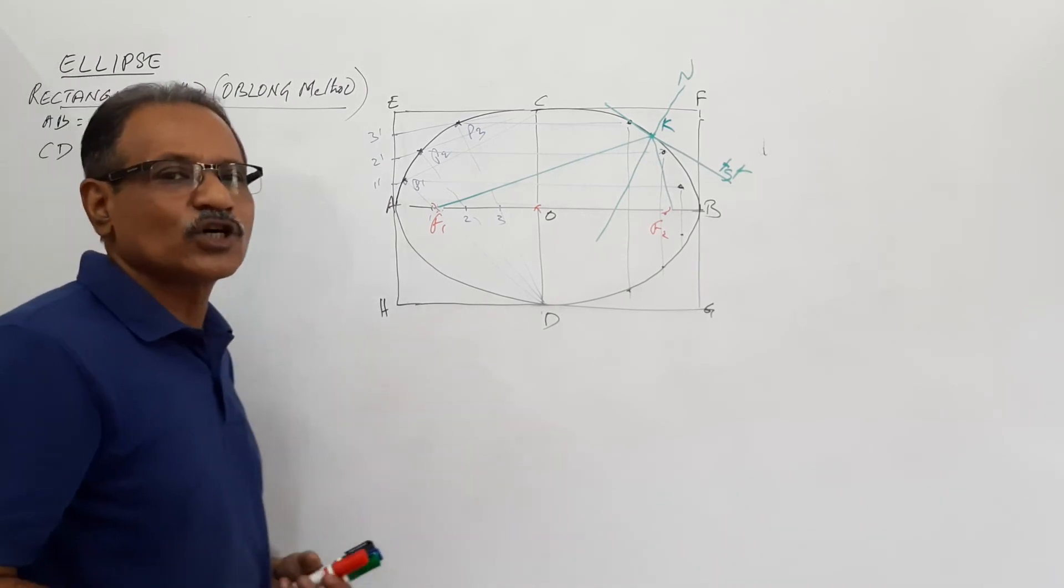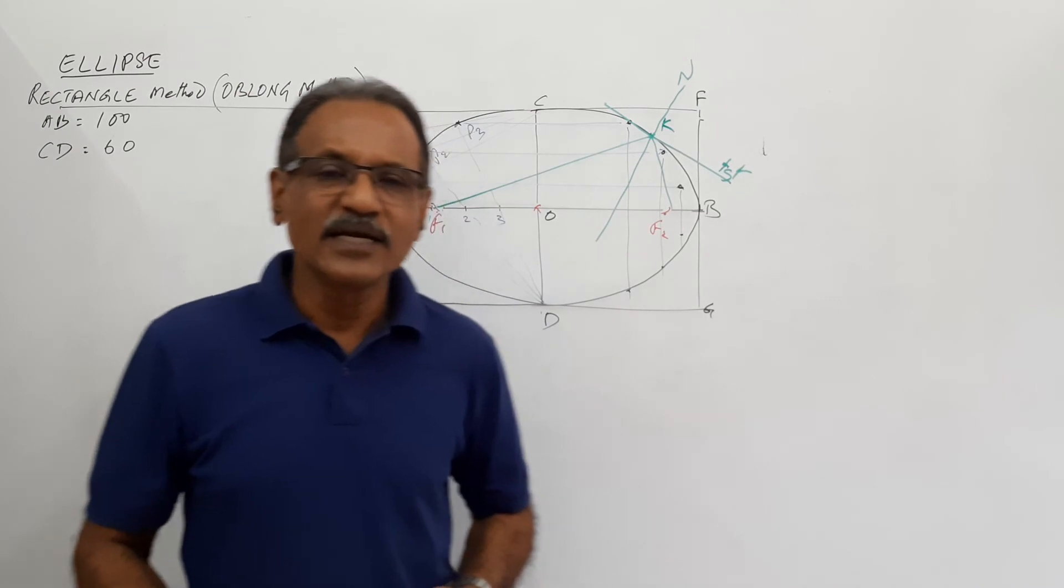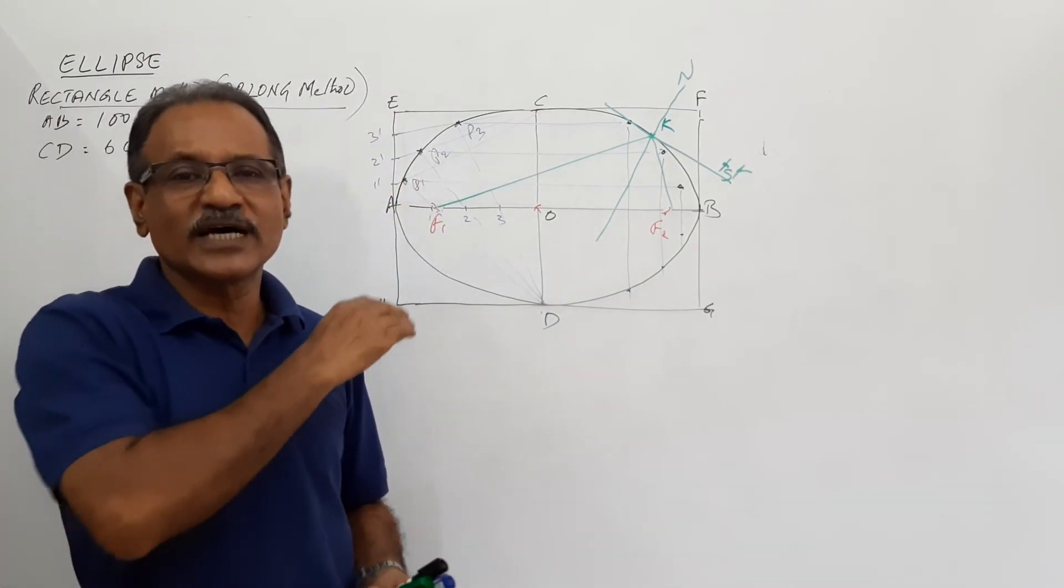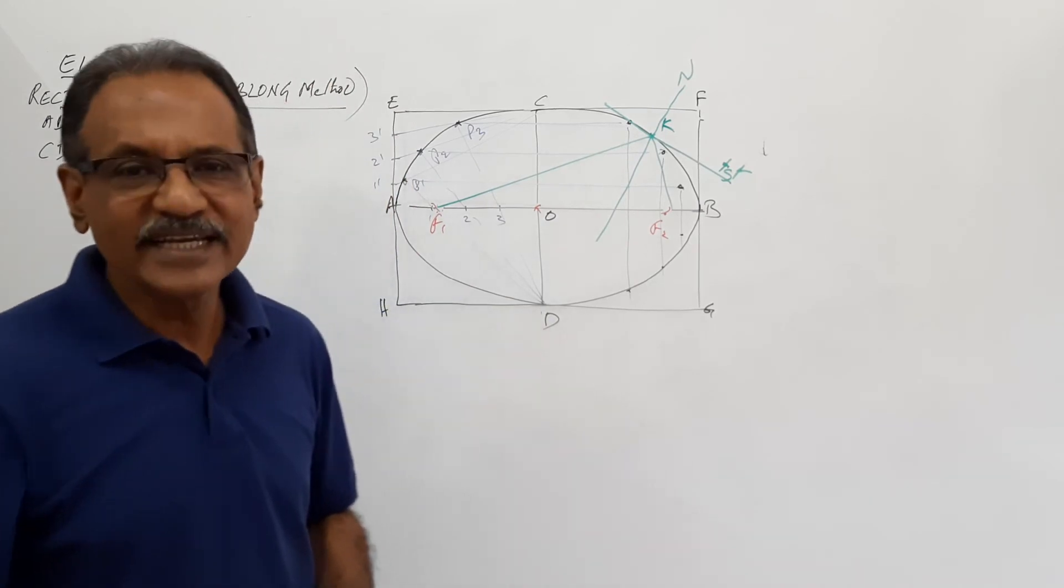So you have learned how to draw an ellipse by rectangle method. You have also learned how to draw the normal and tangent at any point. I think it is clear.